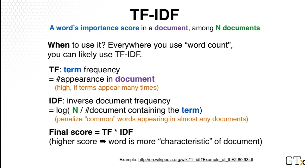We can use a technique called TF-IDF, which stands for Term Frequency Inverse Document Frequency. It's a very popular approach because it's very effective in practice and also very easy to understand. The definition of TF-IDF is that we want to compute a word's importance score in a document among n documents. The score is computed relative to a document, and when we compute a score we need to consider the whole document collection of n documents. Anytime we use the bag of words model instead of using 0 and 1, we can replace those 1s with the word's TF-IDF score — so anytime you use word count, you can essentially use TF-IDF.